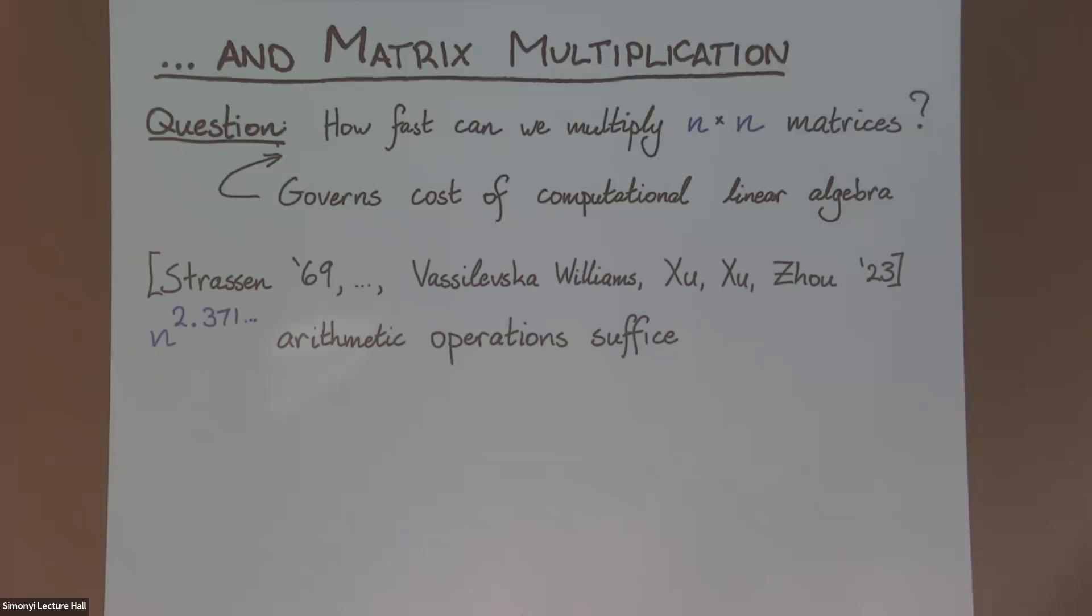So, what do we know about this? There's a whole industry of designing matrix multiplication algorithms. It started with Strassen in 1969, and, in fact, the current record is just a few months old. You can multiply n by n matrices using about n to the 2.371 operations. And it's a major open question. Do n squared operations suffice, or do you actually need to pay a little bit more to multiply matrices? This is a major question, and using some of the ideas from the previous slide, you can actually show a connection between the complexity of multiplying matrices and this question of derandomizing polynomial identity testing.